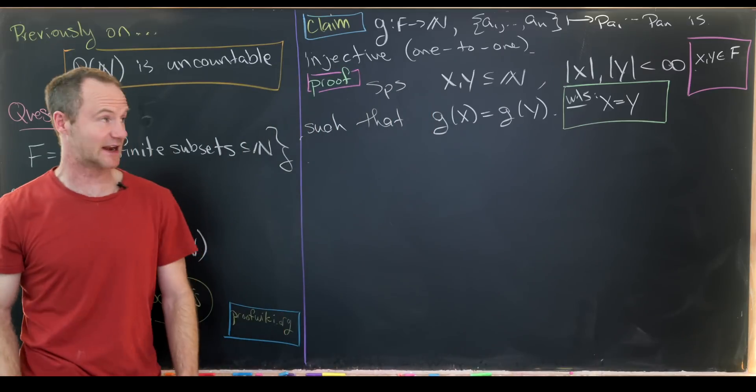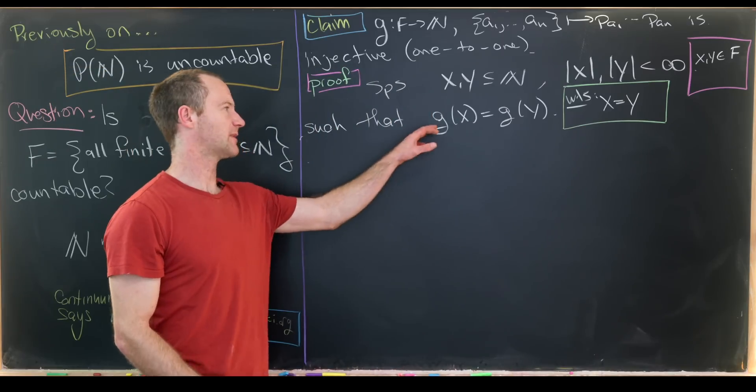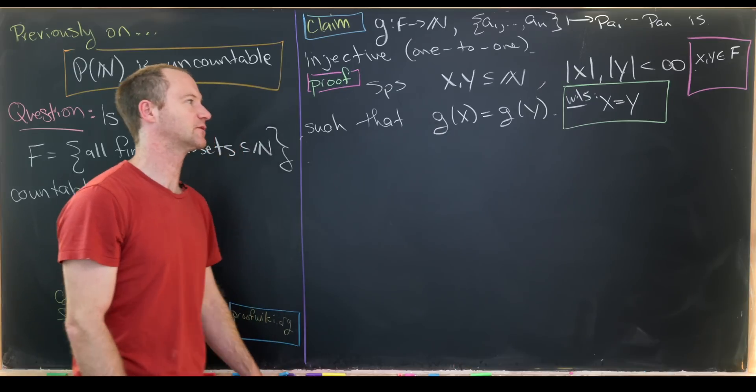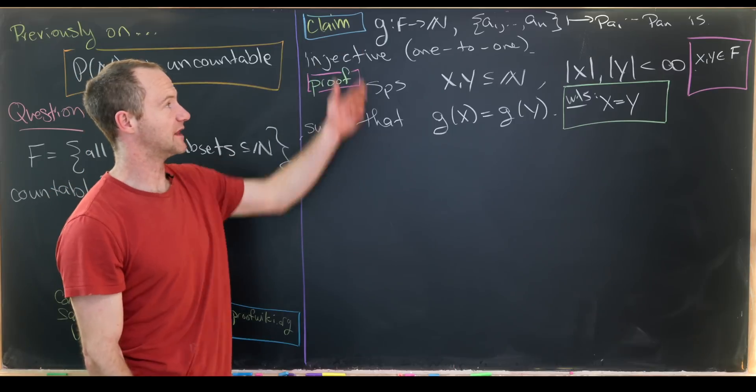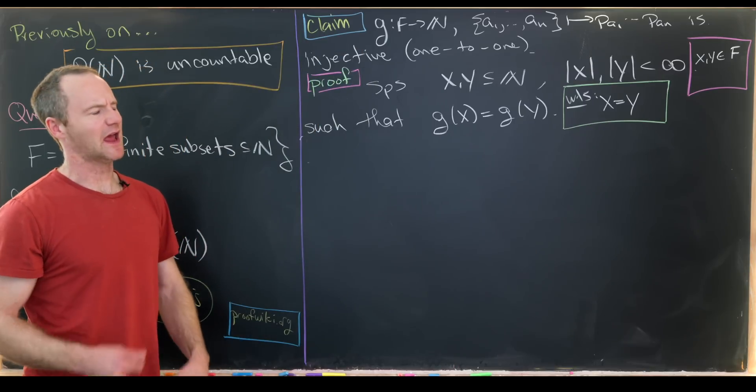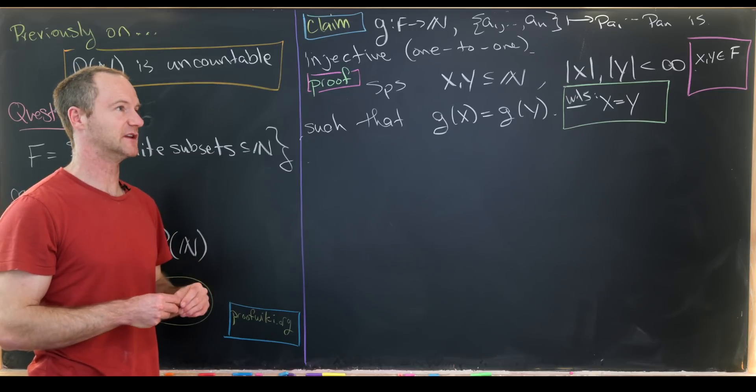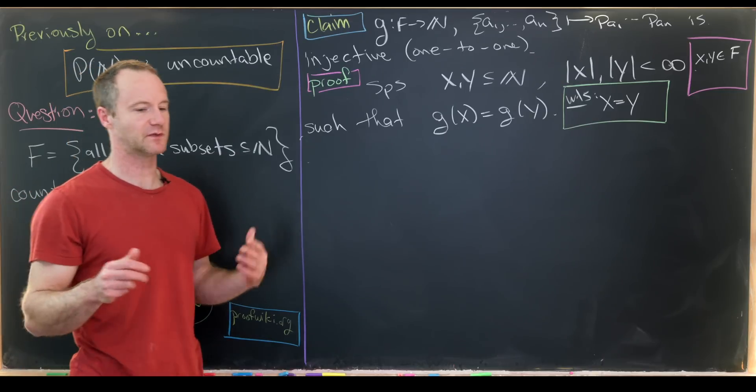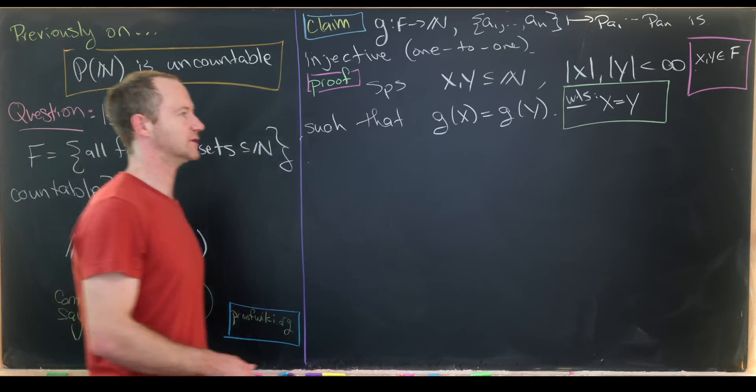They've got to be subsets of the natural numbers with finitely many elements. Now suppose they have the same output when G is applied to them: G(X) = G(Y). Our goal is to show that X = Y. This is the standard strategy for showing a function is one-to-one. You assume G(X) = G(Y), then show that leads to X = Y based on the definition of the function.